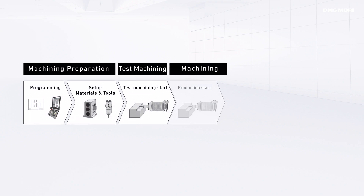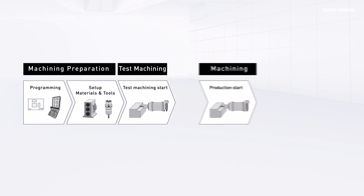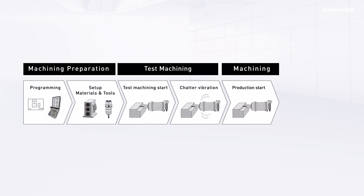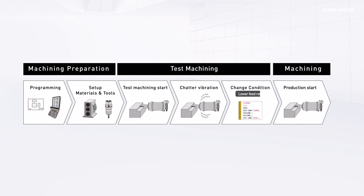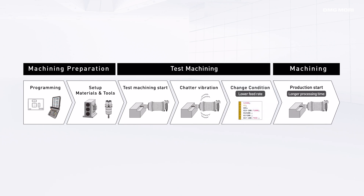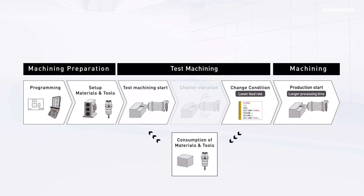Typically, when operators find chatter vibration during test machining before starting mass production, they will lower the feed rate to maintain a good surface quality. This, however, leads to longer processing time and lower productivity. Also, determining the optimal feed rate is a time-intensive task even for skilled operators, and in case of high-mix low-volume production, the excessive material consumption causes substantial losses.